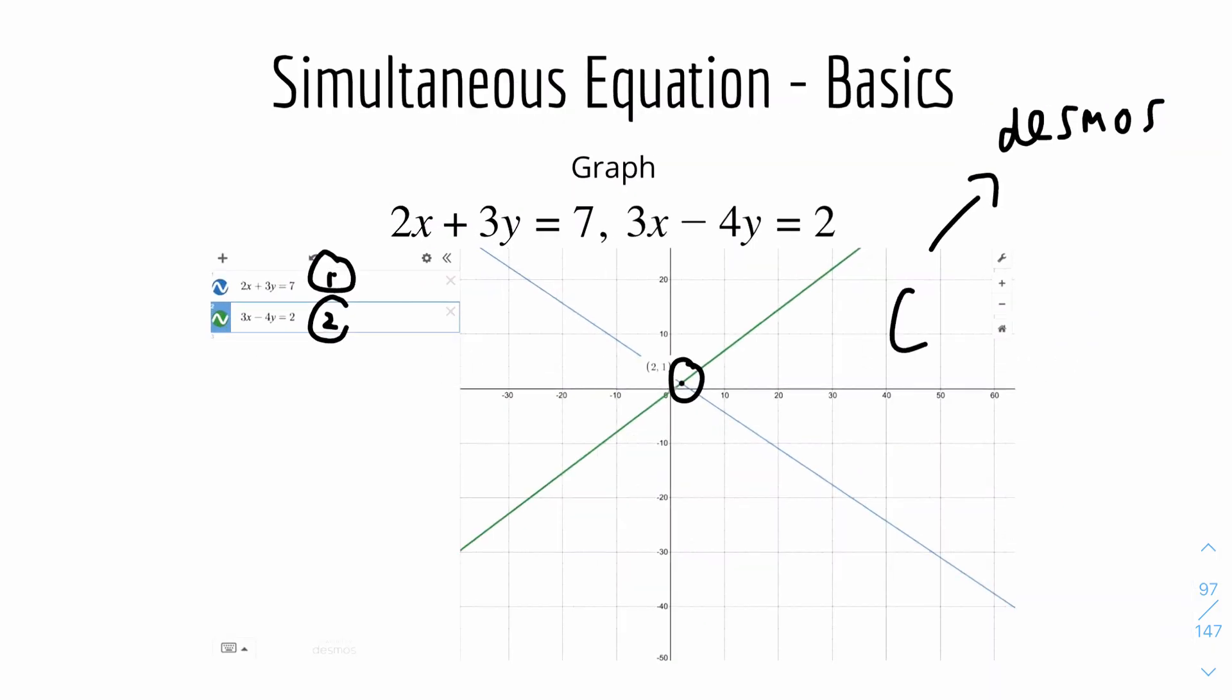Because in simultaneous equations, when you equate both equations together, you're basically finding where they both intersect. You're trying to find the common point that both have for a specific value. So basically if you have 2x minus 1 equals 3x plus 2, when you solve for x, you're finding the x value which is common in both equations where they intersect.